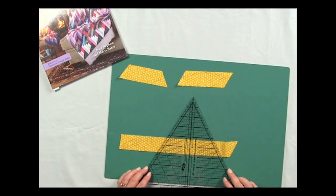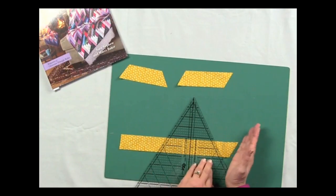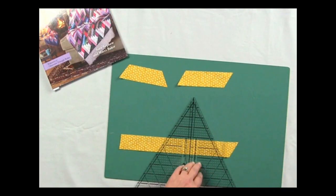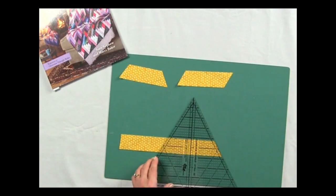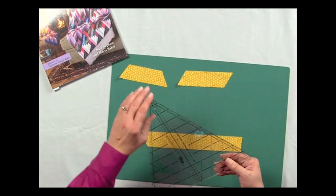It's going to be angling the other direction. You can see how this goes this way. We're going to be angling that direction. We're going to cut here, and then we'll turn it back, and we'll cut another four and a quarter.